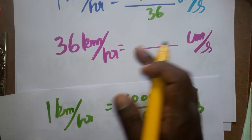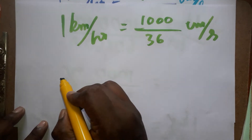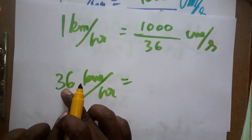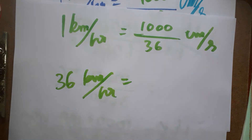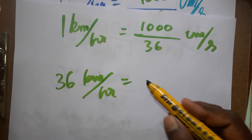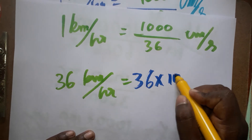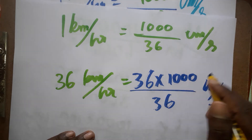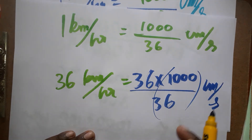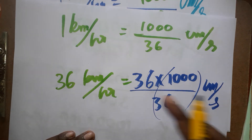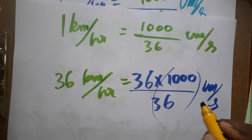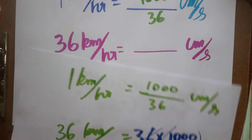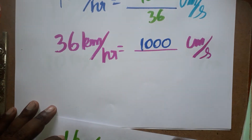For example: 36 kilometer per hour is equal to dash centimeter per second. To convert 36 kilometer per hour, always multiply with 1000 divided by 36. So it is 36 times 1000 divided by 36 centimeter per second. If you want to convert, you multiply these two numbers — kilometer to centimeter, hour to second. 36 gets cancelled, so the answer will be 1000 centimeter per second.